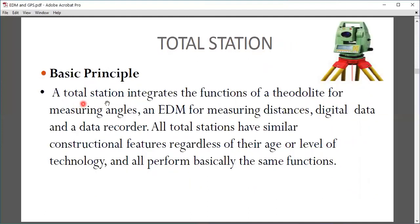Total Station: The basic principle of Total Station integrates the function of a theodolite for measuring angles and EDM for measuring distance, with digital data and data recorder. All Total Stations have similar constructional features regardless of their age or level of technology and all perform basically the same function. The basic function is measuring angles and distances and recording data.